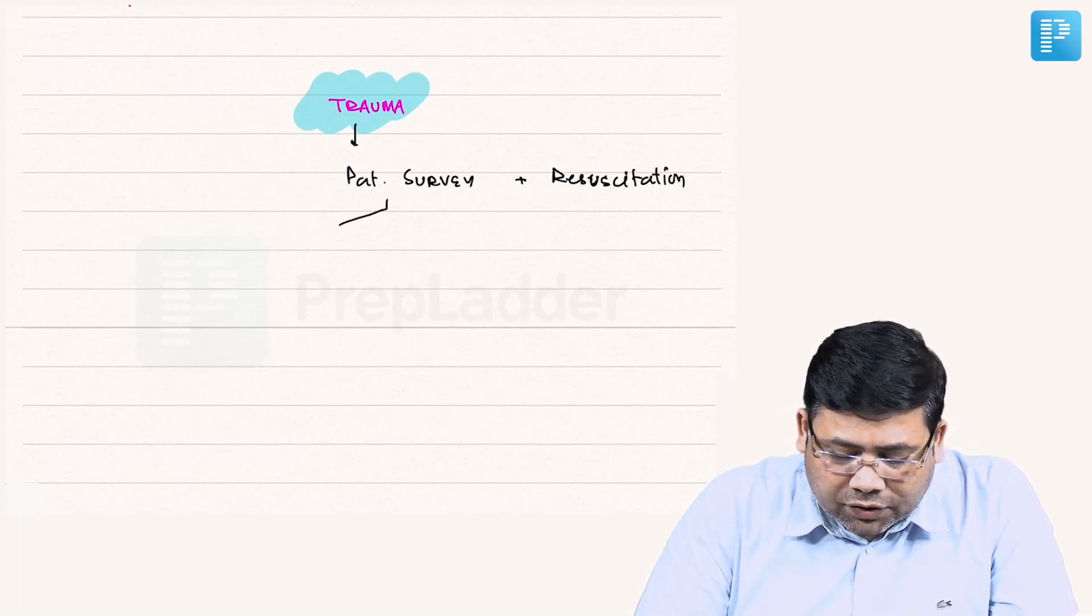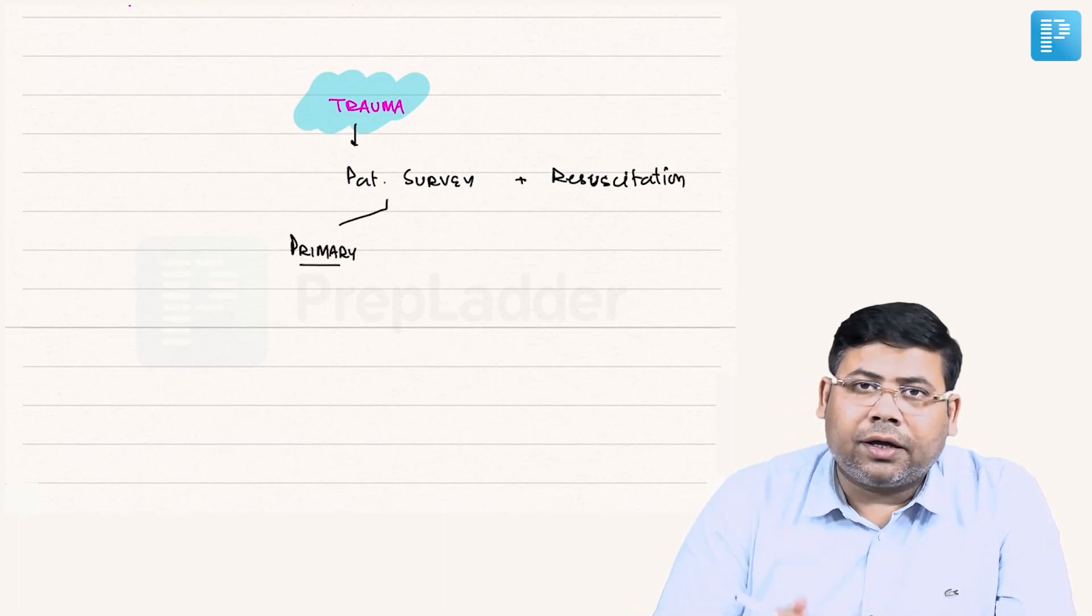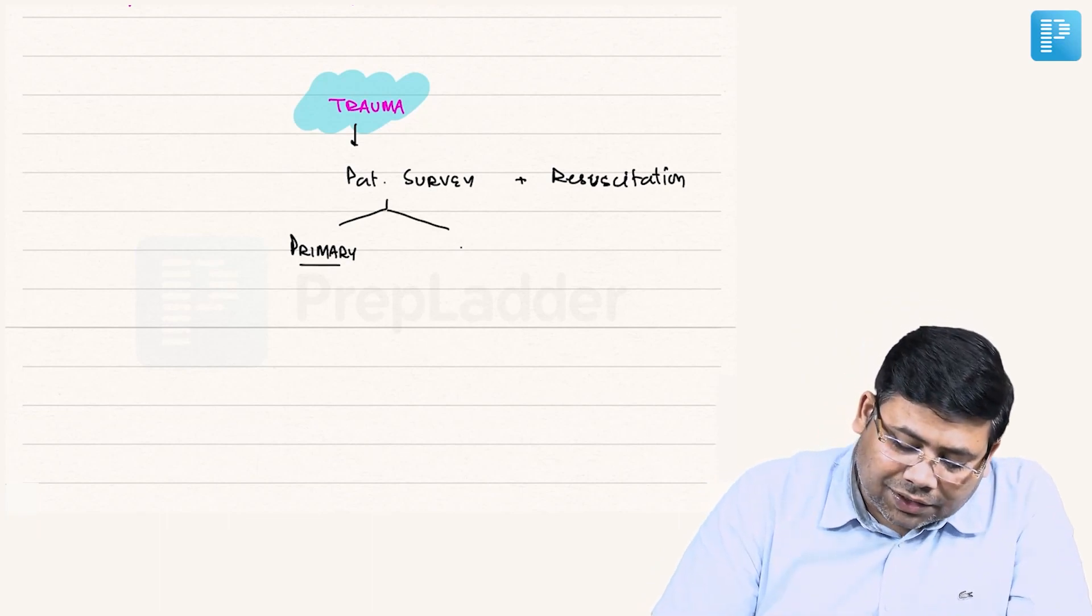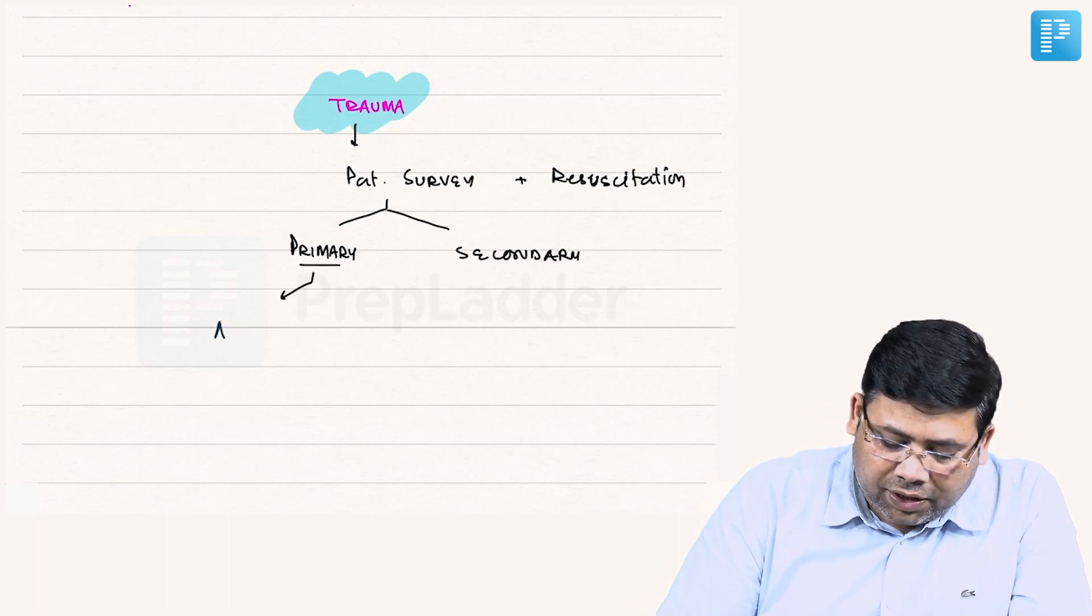Patient survey is of two types. One is the primary survey which is done at the time of arrival in the ER, and we have the secondary survey which is done after hemodynamic stabilization.